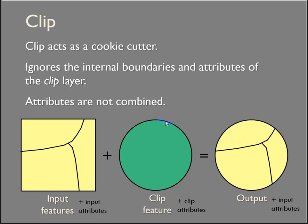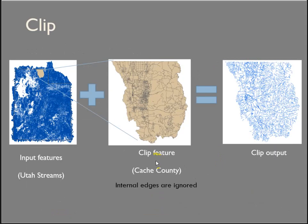Input features, clip feature — like a cookie cutter — gets rid of all the dough outside the cookie cutter. The only attributes that are exported are from your input feature. The clip attributes are completely ignored. That's important because Intersect is going to do the same thing as a clip, but you do get to maintain your attributes. So it's a way of keeping your data under control, keeping it clean. But also, if you're thinking about clipping but you still need to know what's going on, then think Intersect, which is also an extraction tool.